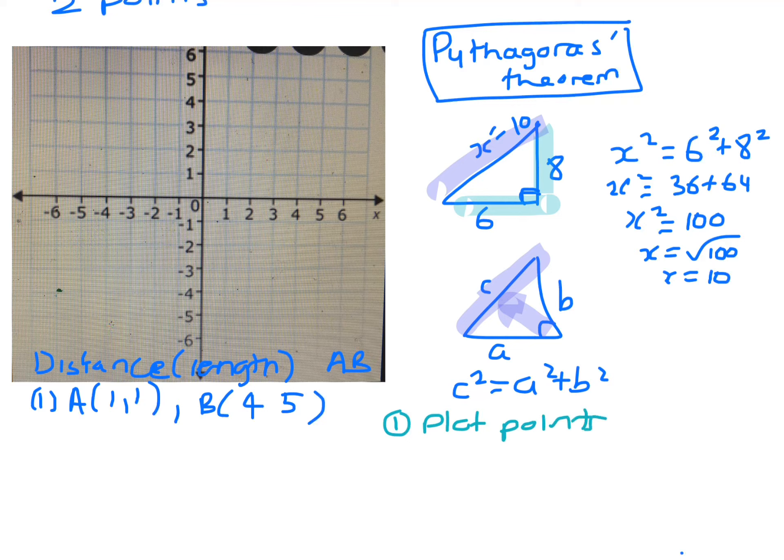Very similar to when we do gradient. So you go across one, up one, so there's the first point, that's A. Okay, the other point, across to 4, and then up 5. 1, 2, 3, 4, 5. So that's where you are there.